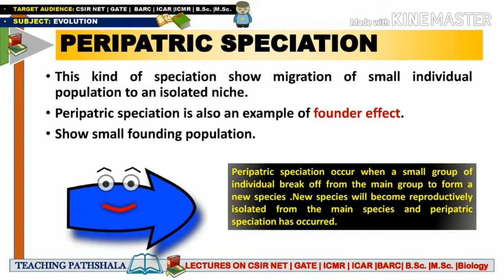Peripatric speciation is also an example of the founder's effect. In founder's effect, a small group of individuals migrates to a new area and establishes a founder population. Similarly, in peripatric speciation there is migration of individuals from the original population. This small founding population establishes a new group, which is why peripatric speciation is considered an example of the founder's effect.